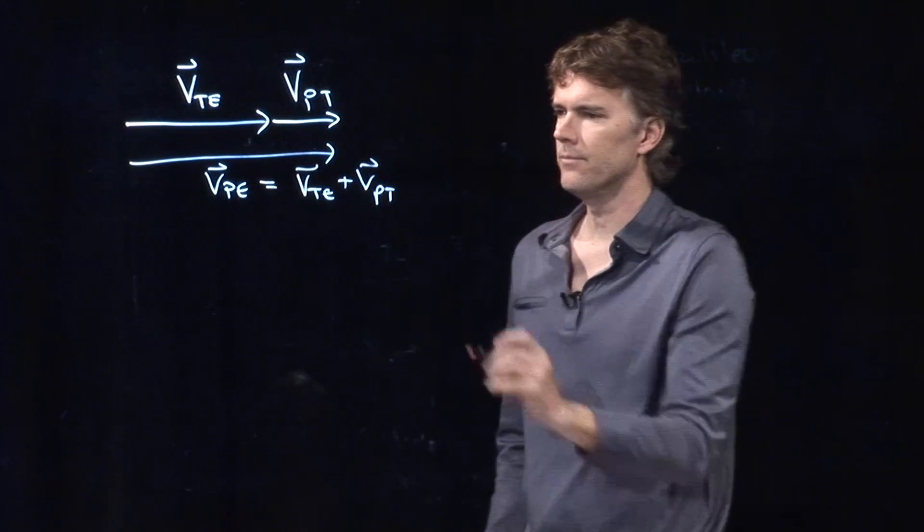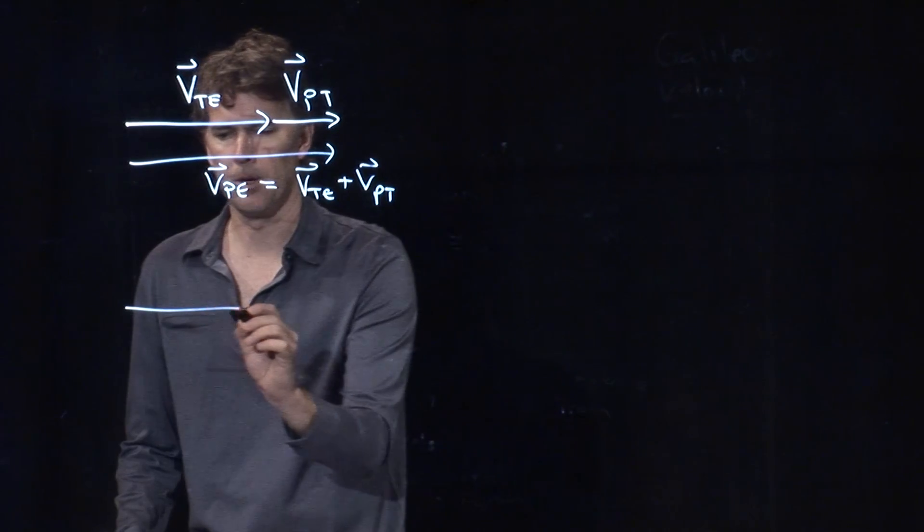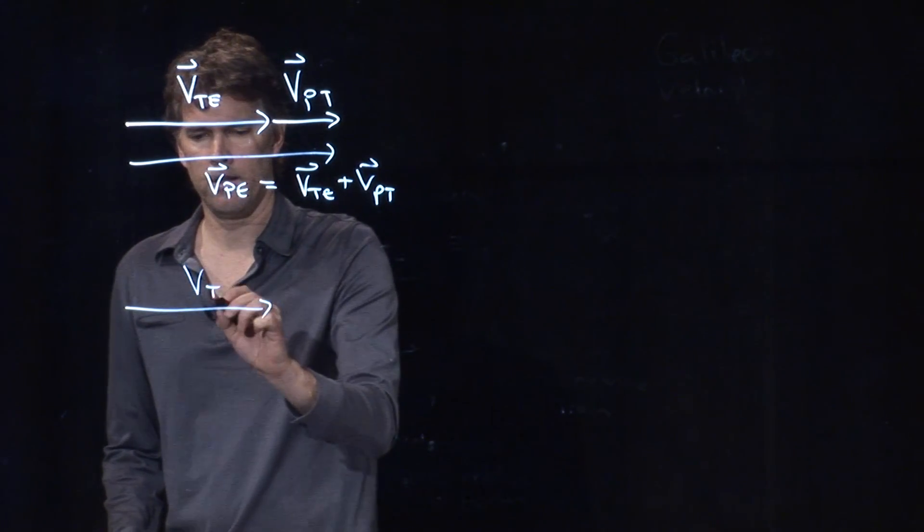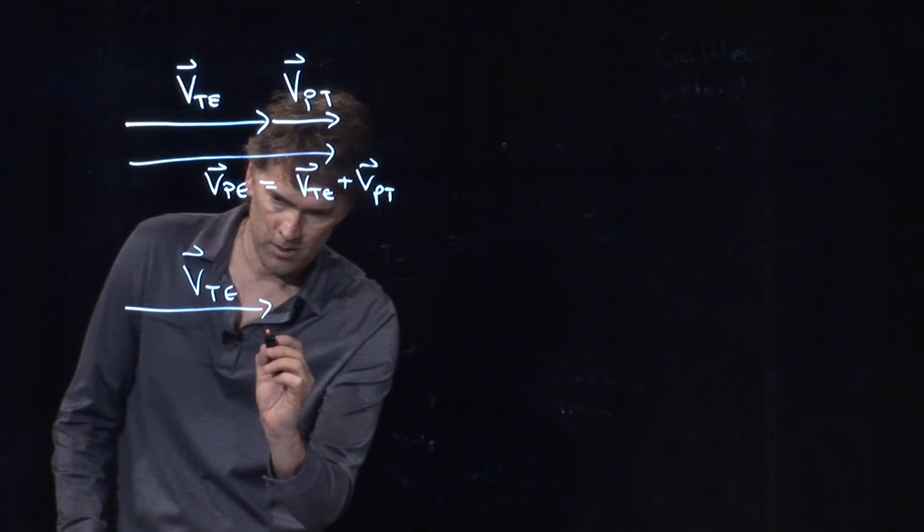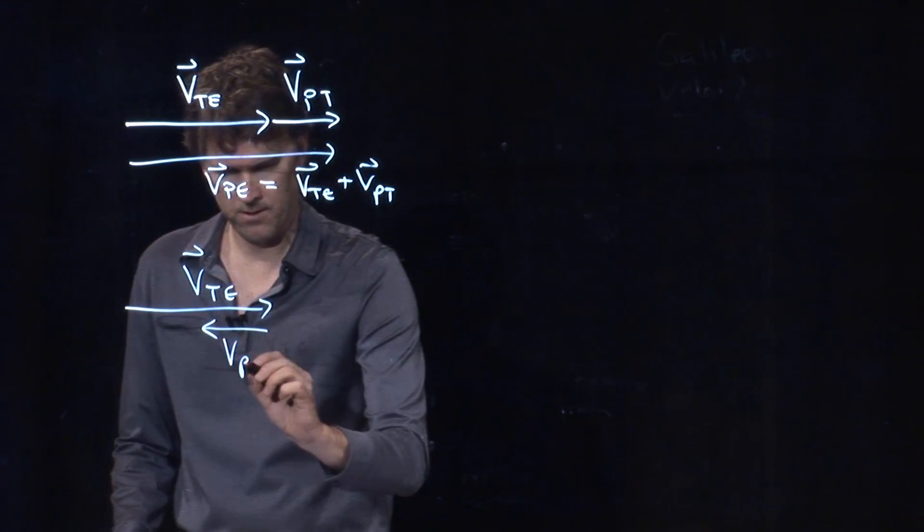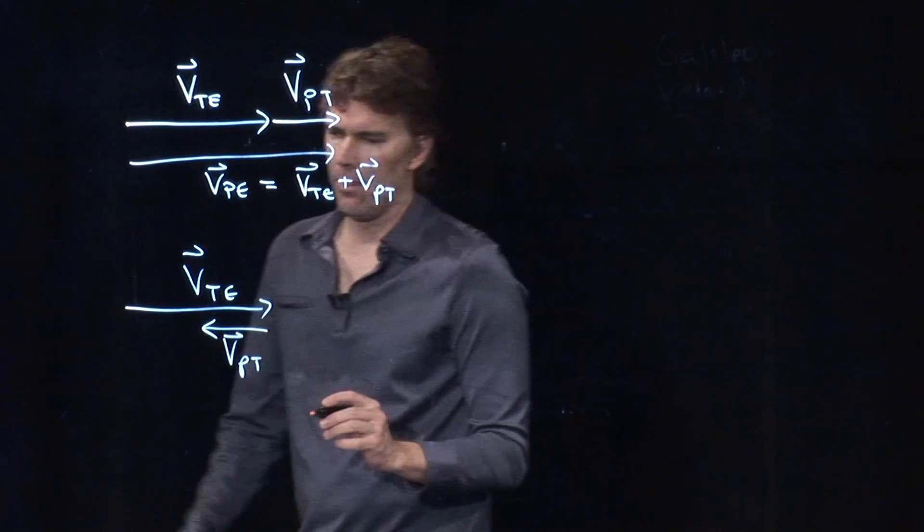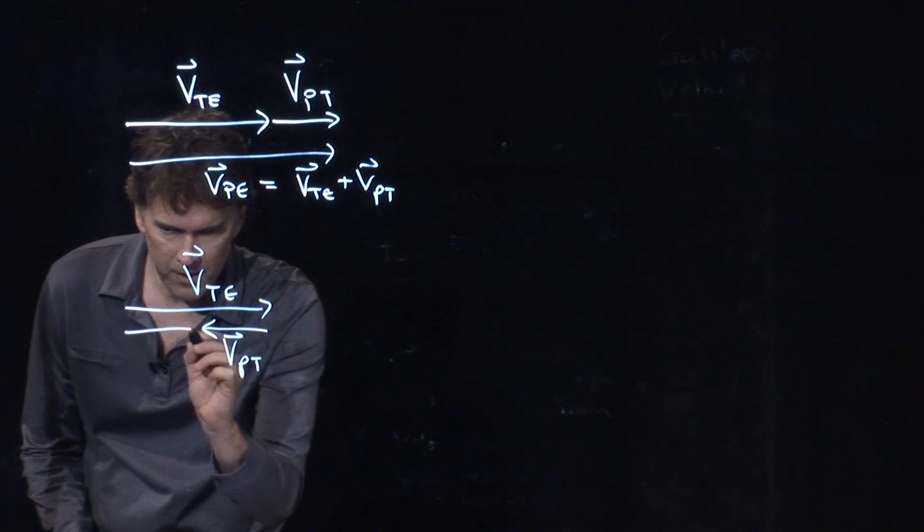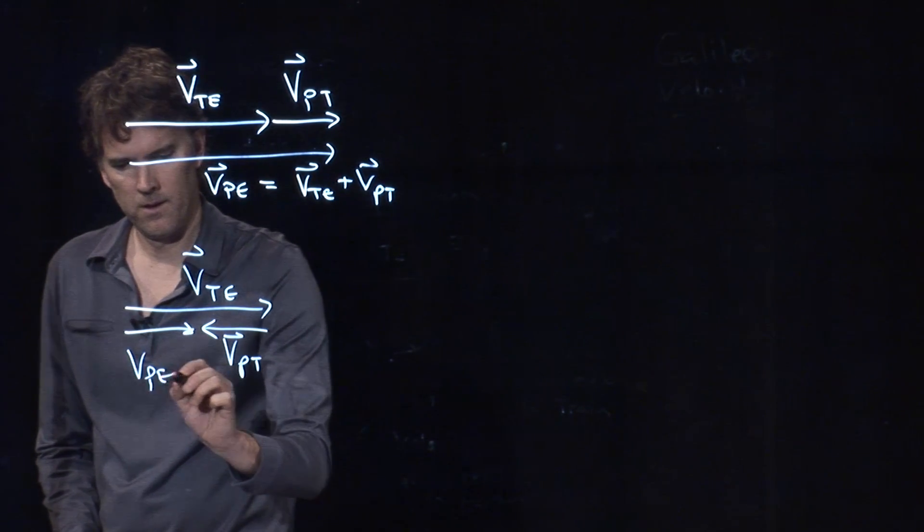But what about when I go the other way? If I'm going the other way, then the velocity of the train relative to the Earth, I have to add a negative velocity of the person relative to the train, and therefore the sum is going to be that little bit right there.